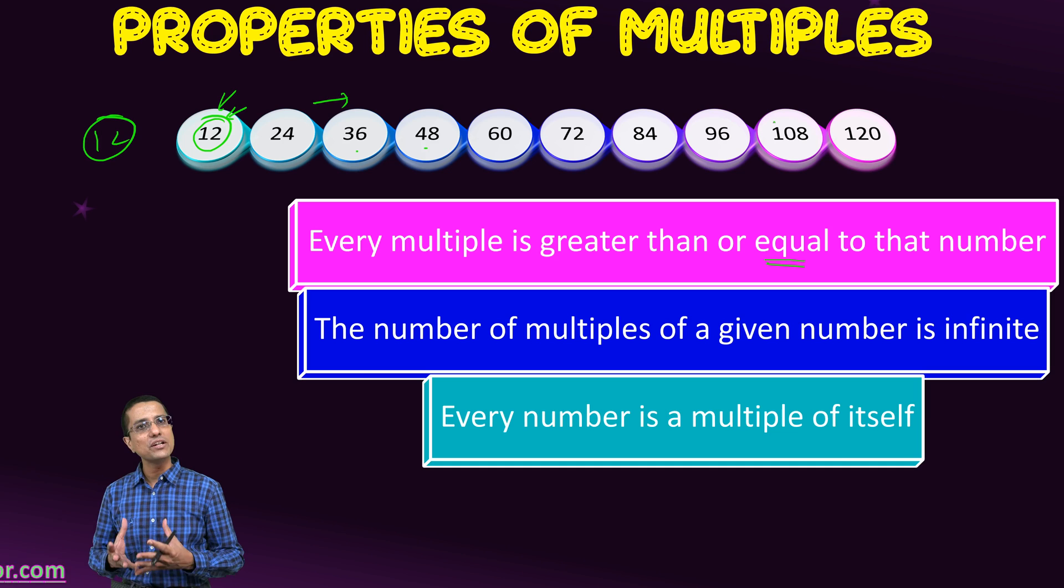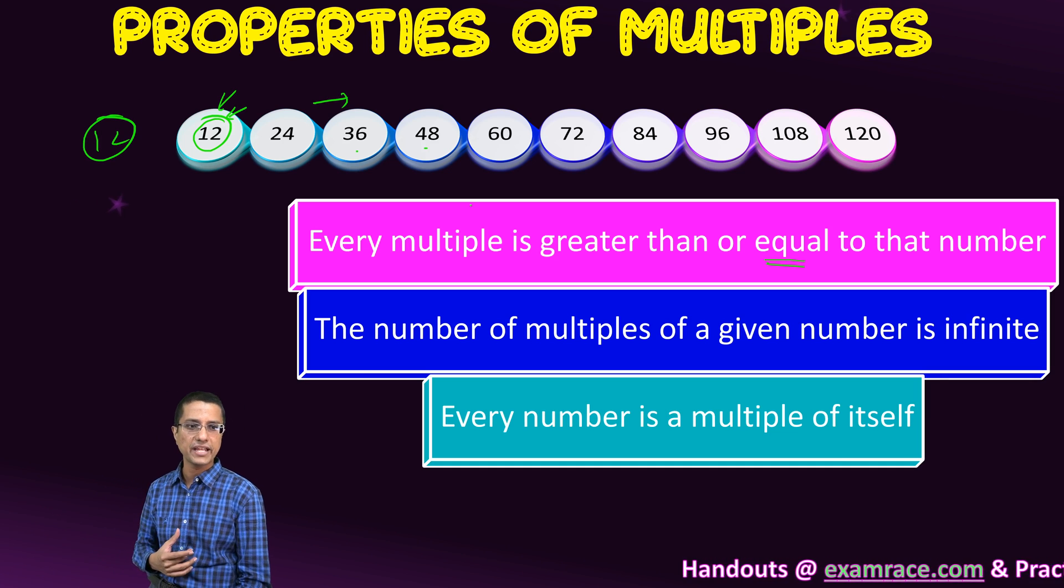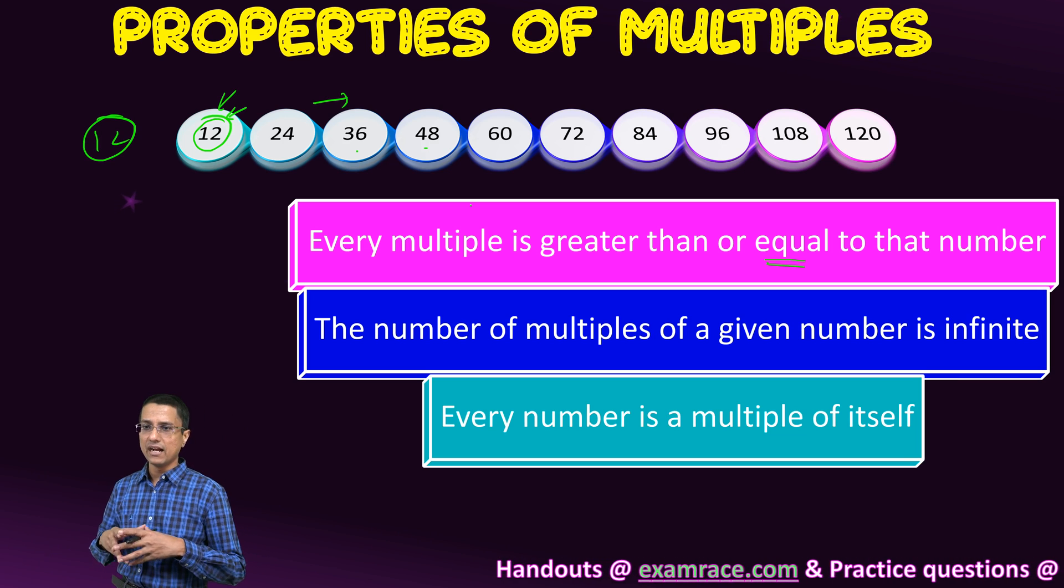The third property we already looked at: every number is a multiple of itself. So 12 would be a multiple of 12, 9 would be a multiple of 9, and that is to some extent understood.